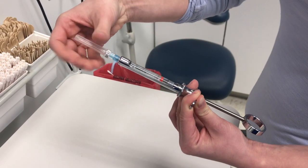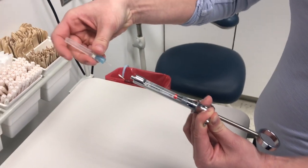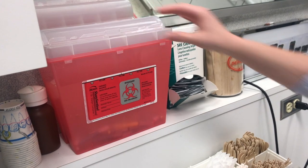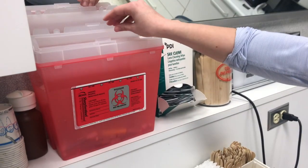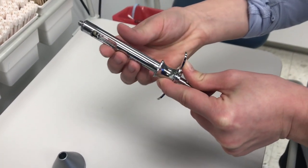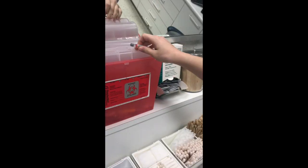Unscrew the needle and place it in the sharps container. Pull back on the thumb ring and remove the cartridge, then throw the cartridge in the sharps container.